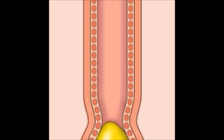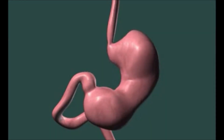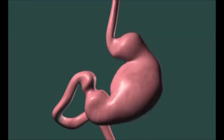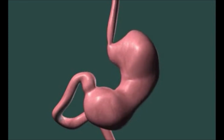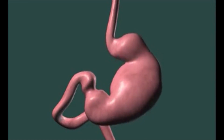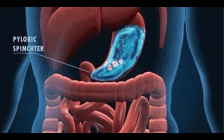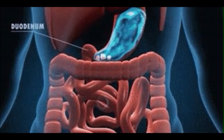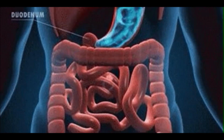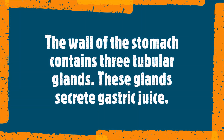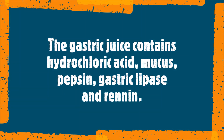The stomach is a J-shaped large muscular organ lying on the left side of the abdomen. The partially digested food is further broken down and churned to form a semi-solid paste. The walls of the stomach contain gastric glands which secrete gastric juice. The gastric juice contains hydrochloric acid, mucus, pepsin, gastric lipase, and renin.